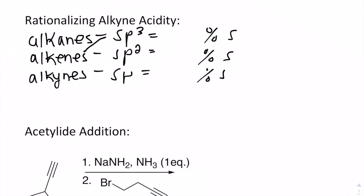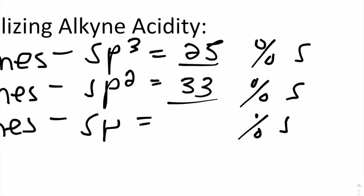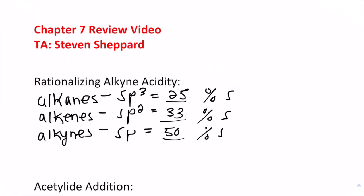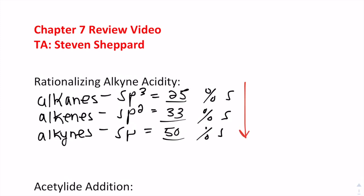For alkanes, one S-orbital out of four total gives 25% S-character. For alkenes, one S-orbital out of three total gives 33% S-character. For alkynes, one S-orbital out of two total gives 50% S-character. Since more S-character means more acidity, we can rationalize that alkynes — or the protons attached to alkynes — are going to be the most acidic.